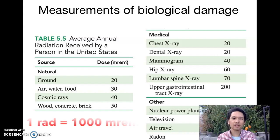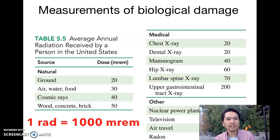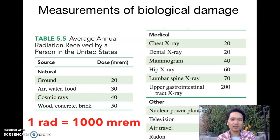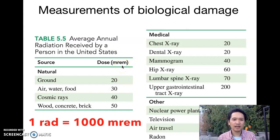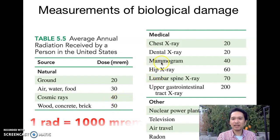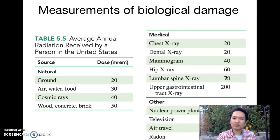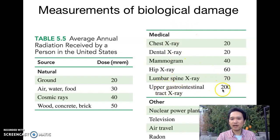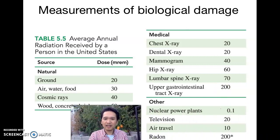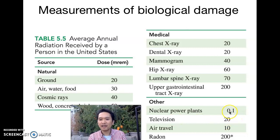You can read in your textbook about the average annual radiation received by a person in this table. It might be surprising — the units are in millirems. From natural sources, the highest amount you get is 50 from wood, concrete, and brick. In the medical field, a chest x-ray is 20, a dental x-ray is 20, a mammogram is 40. A tract x-ray is 200. It's in the dosage and the frequency, so you don't want too many of these done. There are other sources too — like living near a nuclear power plant, or even from your television.